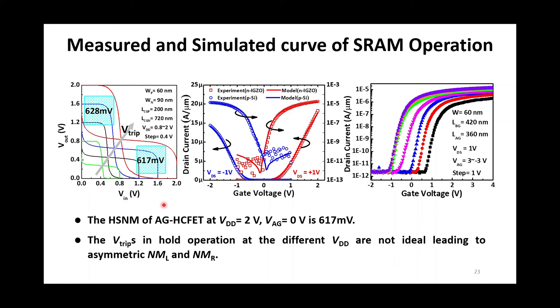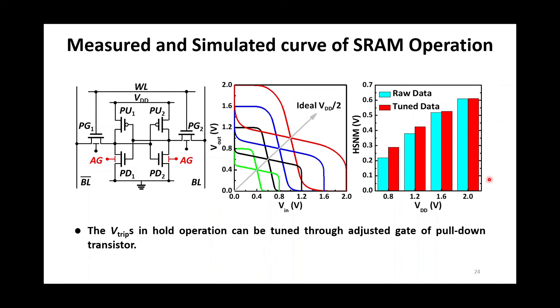So we use BSIM-CMG multi-gate FET compact model to calibrate both IGZO and P-type poly-silicon of AG HC-FET, with excellent agreement between model and measured data. Meanwhile, the threshold voltage tunability of N-MOS in the 6T SRAM is introduced to improve SRAM performance. First, the hold noise margin is optimized by tuning threshold voltage of pull-down transistor in hold region.